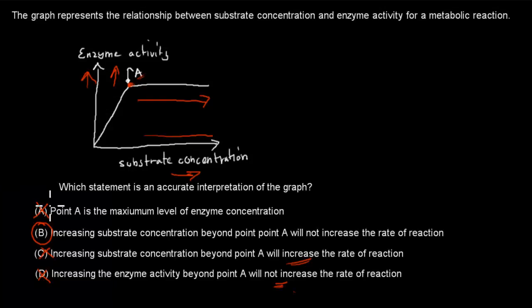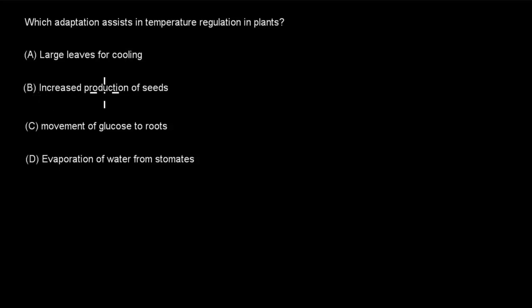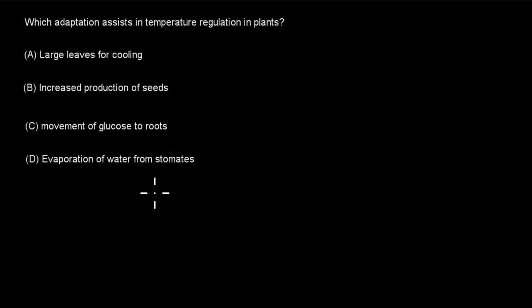The next question: Which adaptation assists temperature regulation in plants? A. Large leaves for cooling. B. Increased production of seeds. C. Movement of glucose to roots. D. Evaporation of water from stomata. Pause the video.